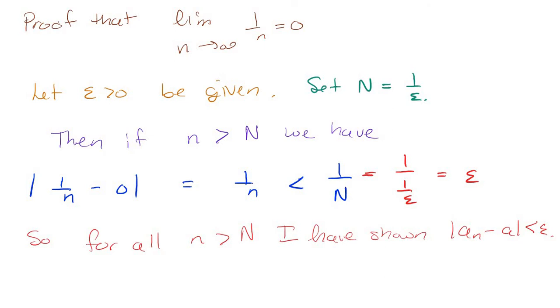So for all little n bigger than that threshold, capital N, I've shown that the absolute value of a_n minus a is strictly less than epsilon, which is the definition of what it means to converge.